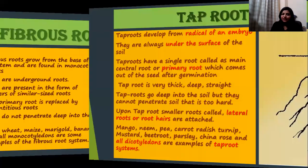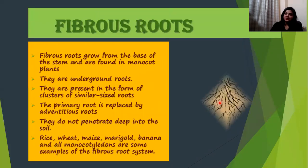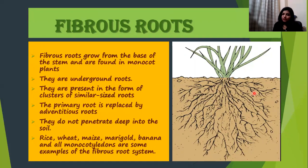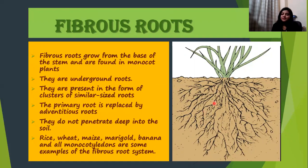The next type is fibrous roots. In fibrous roots there is no central primary root; instead there is a cluster of roots of similar types that do not go deep into the soil. They are found very close to the surface and are usually found in monocot plants. They do not arise from the radicle of an embryo but are attached directly to the stem. Examples include rice, wheat, maize, grass, and banana.